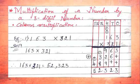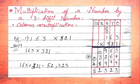In ten-thousands place: 4 + 1 (carry) = 5. Therefore, multiplying 163 × 321 gives the answer 52,323. So 163 is the multiplicand, 321 is the multiplier, and 52,323 is the product. This completes column multiplication.